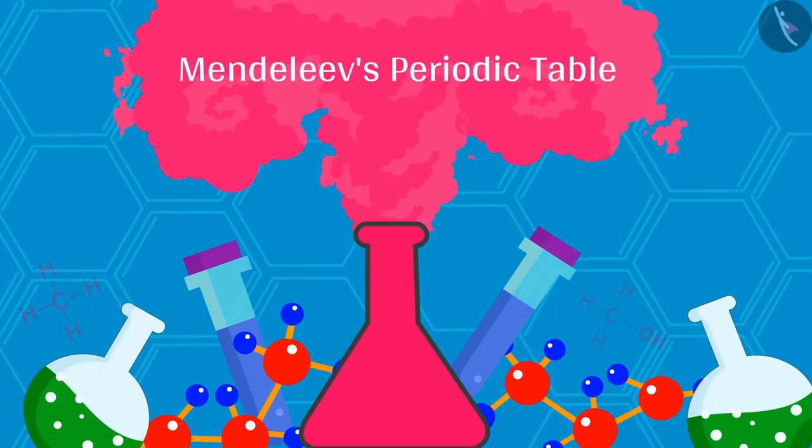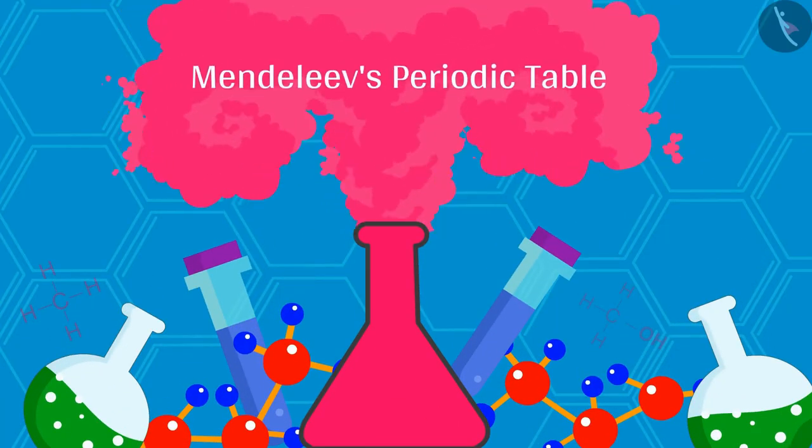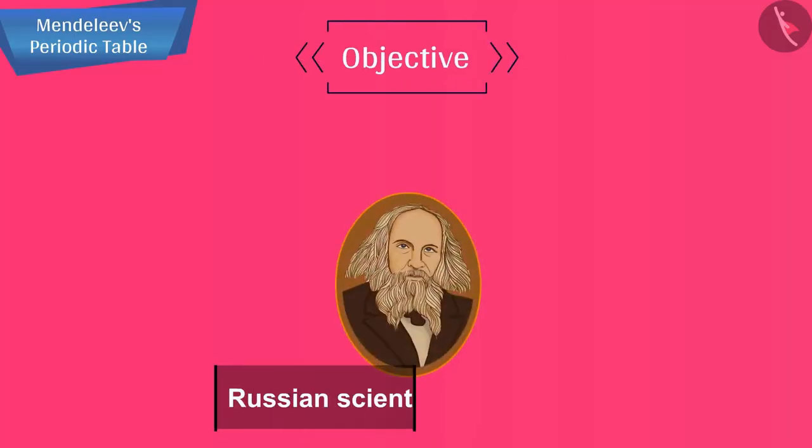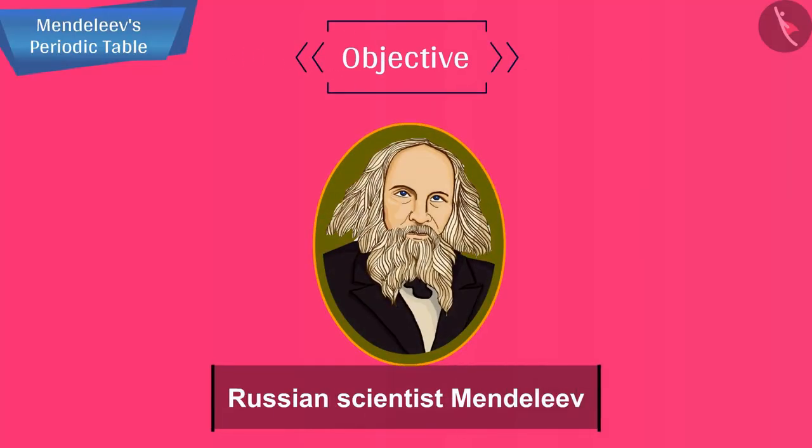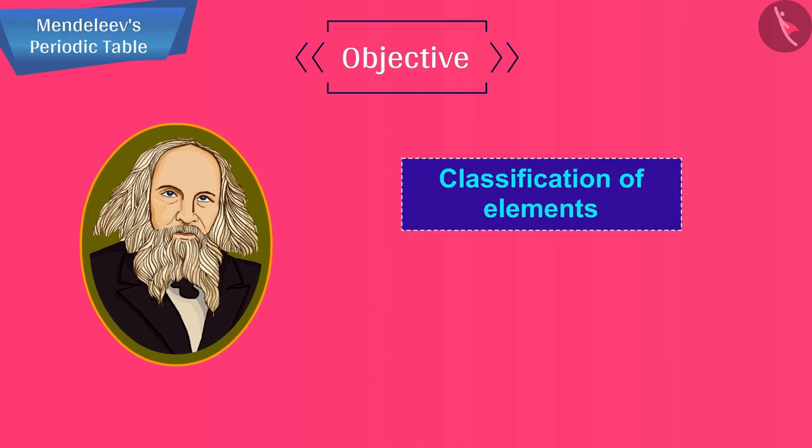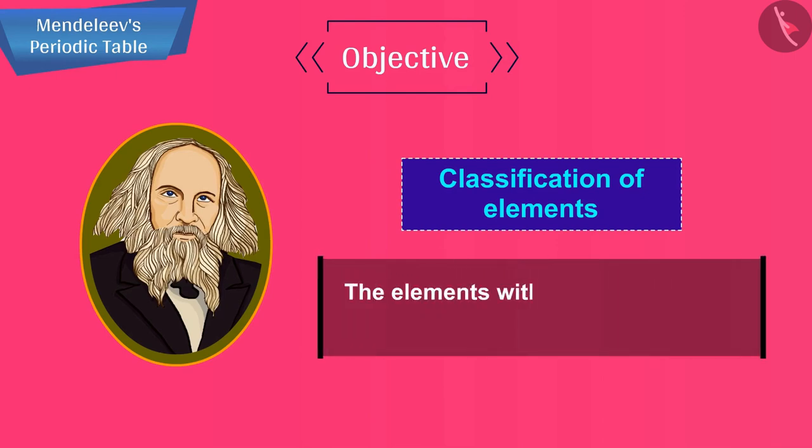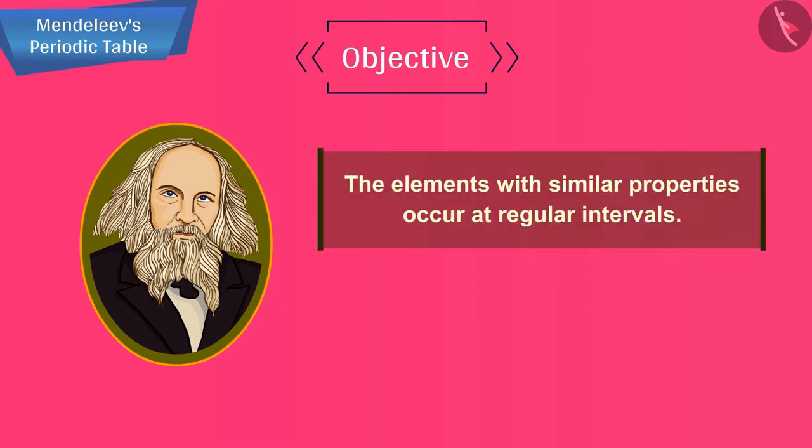Hello friends, welcome to this video session. The topic that we are going to cover in this session is Mendeleev's periodic table. Let us start with the story of a Russian scientist Mendeleev. While he was working on the classification of elements, he found that the elements with similar properties occur at regular intervals. Based on this observation, Mendeleev gave a periodic law.